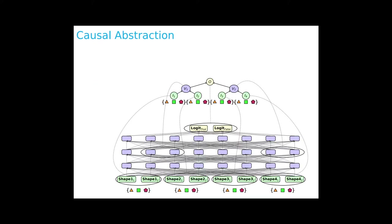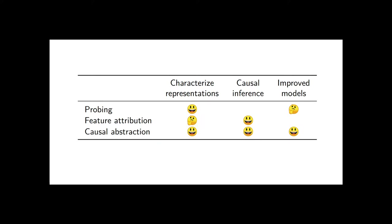Now we'll learn about a different approach to analyzing neural networks, based in a mathematical theory of causal abstraction, which has the potential to characterize our representations, support causal inferences about their role in model behavior, and improve model performance by inducing abstract causal structure in neural networks.